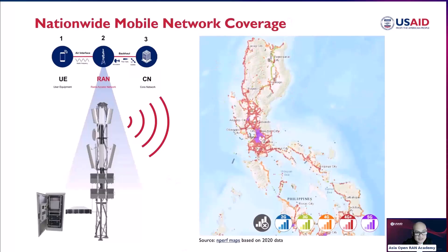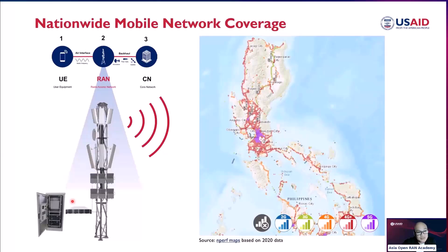We need to put different radio access networks in different places because the output power of these cell sites is limited — typically 20 watts, 40 watts, or 80 watts from the radio. That's why the coverage is very limited compared to a broadcast station. The tower height of a radio access network is probably 50 to 60 meters at most, unlike broadcast stations which can be around 100 meters and transmit at higher power. So you need to put a lot of cell sites in different parts of the country to create seamless coverage.